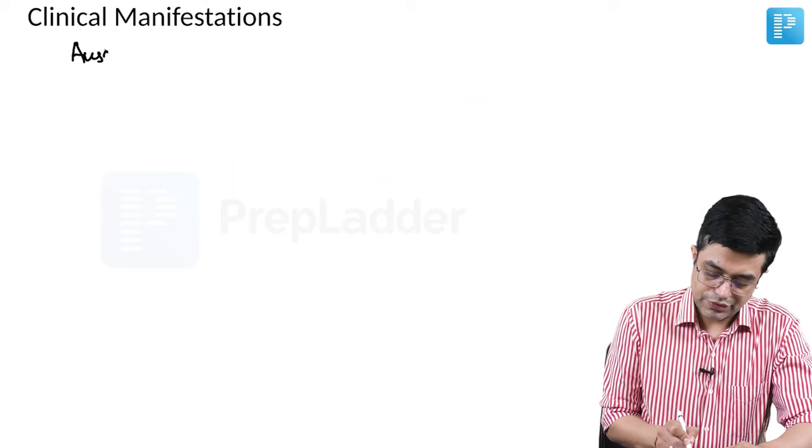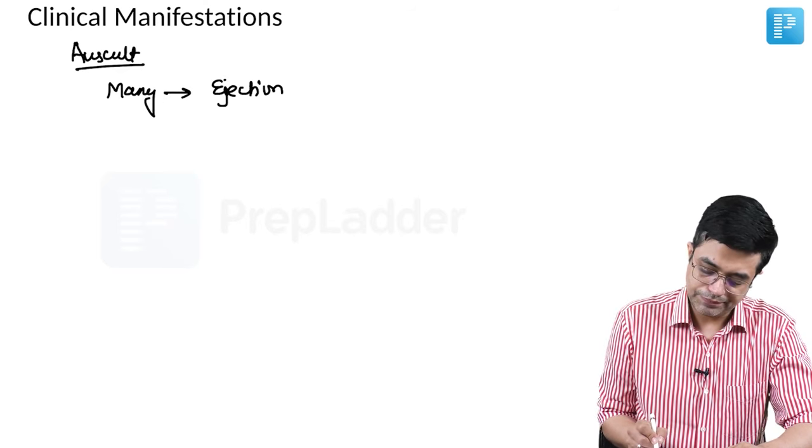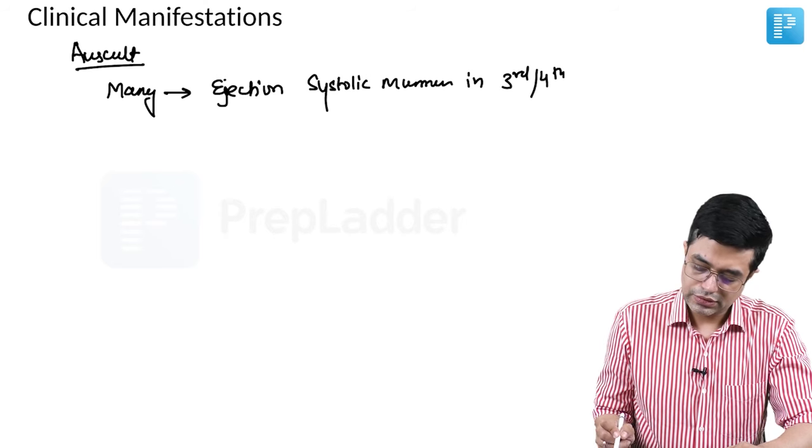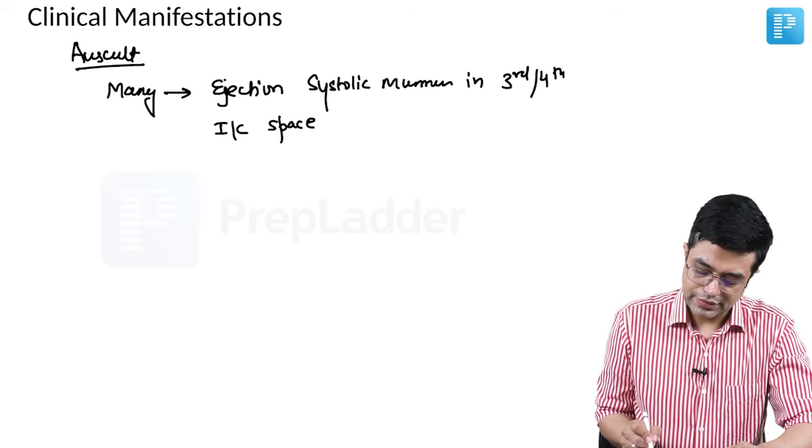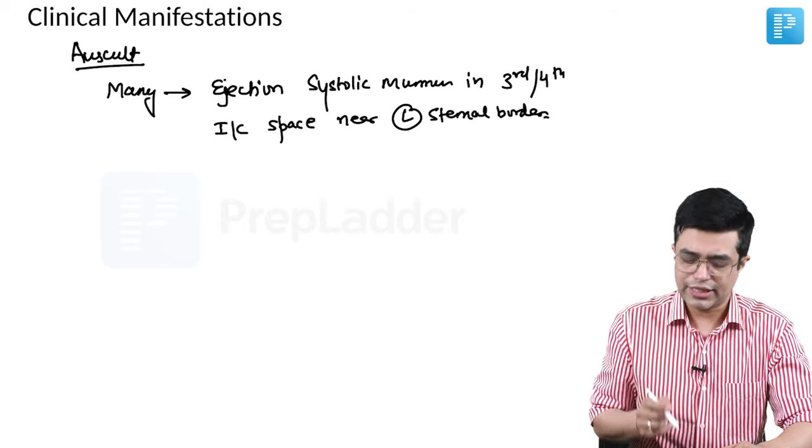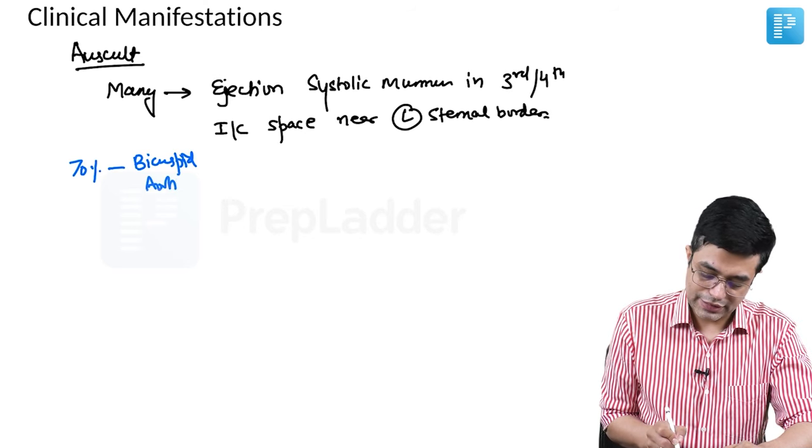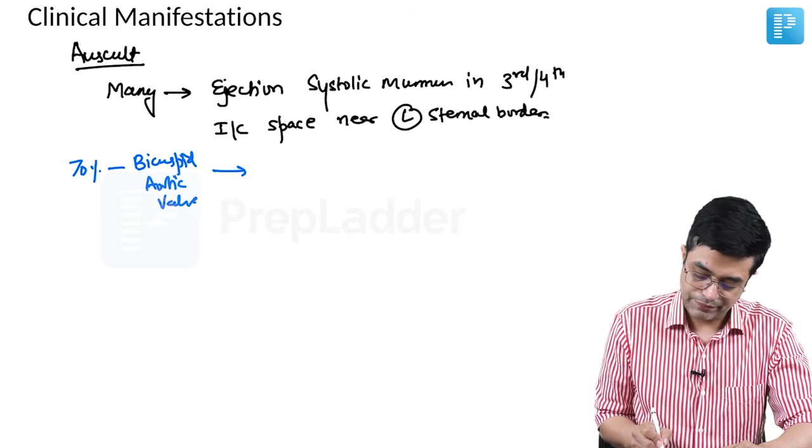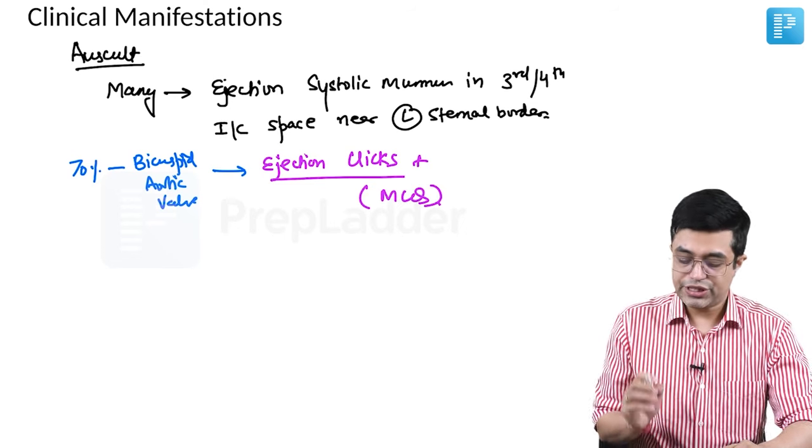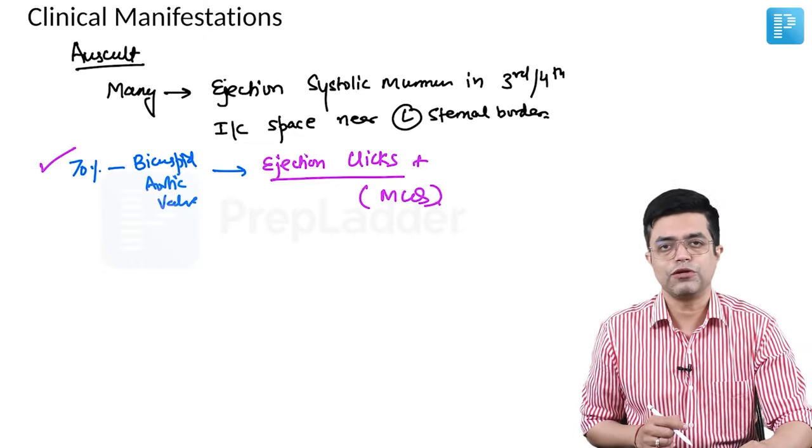In addition, when you do auscultation, you will find that many of these patients will have an ejection systolic murmur in the third or fourth intercostal space near the left sternal border. This will be due to narrowing turbulence being produced in that area. And as I had said, 70% of patients are found to have bicuspid aortic valve also. Those who have bicuspid aortic valve will additionally show the presence of ejection clicks. This is a potential MCQ point. Presence of ejection clicks in coarctation of aorta indicates underlying bicuspid aortic valve. By itself, bicuspid aortic valve is usually silent.